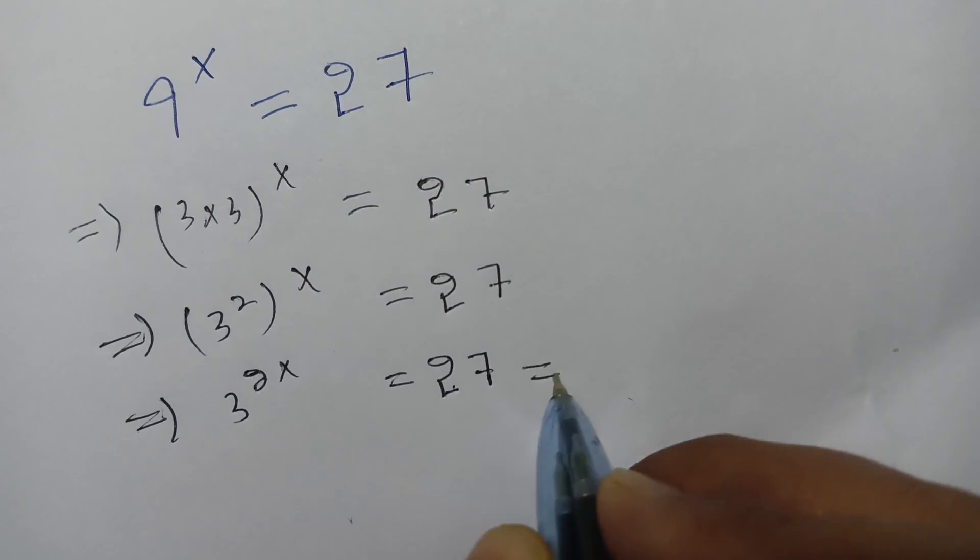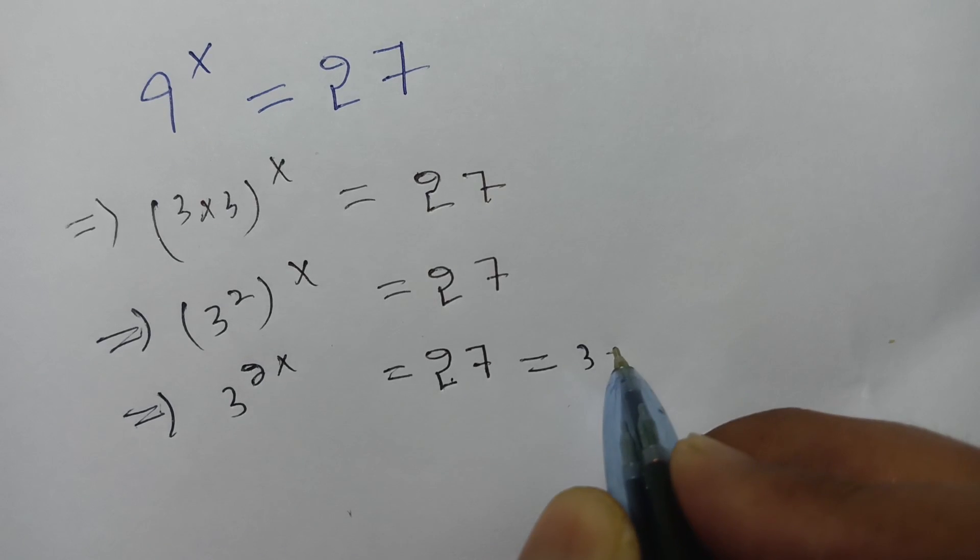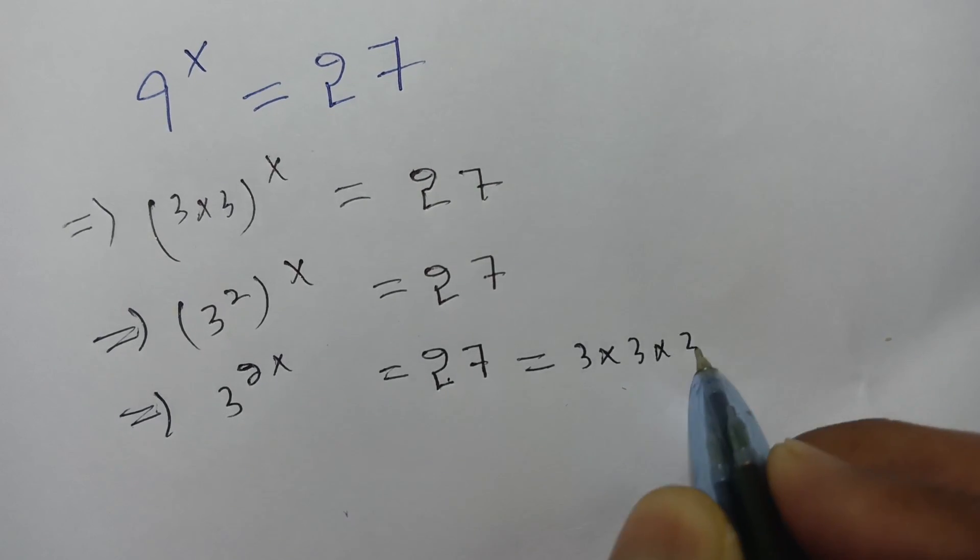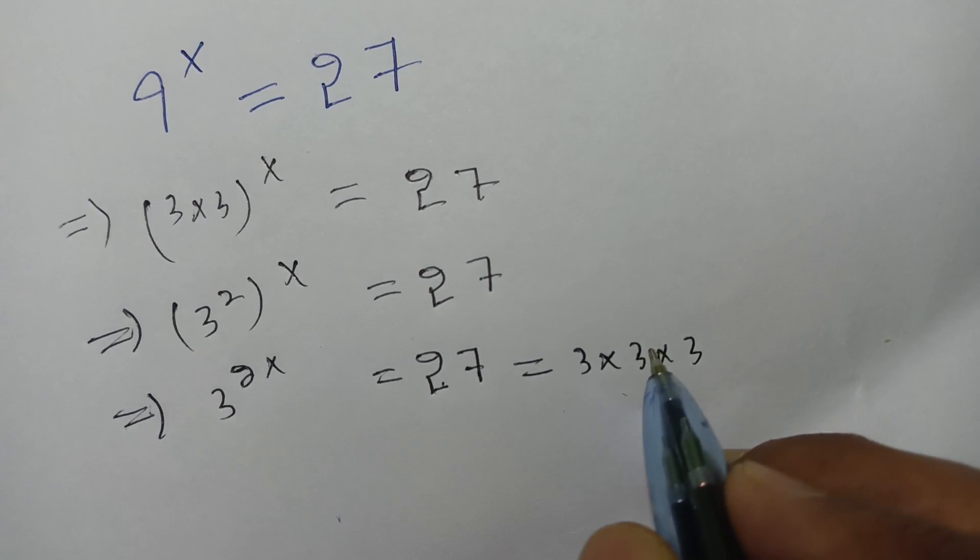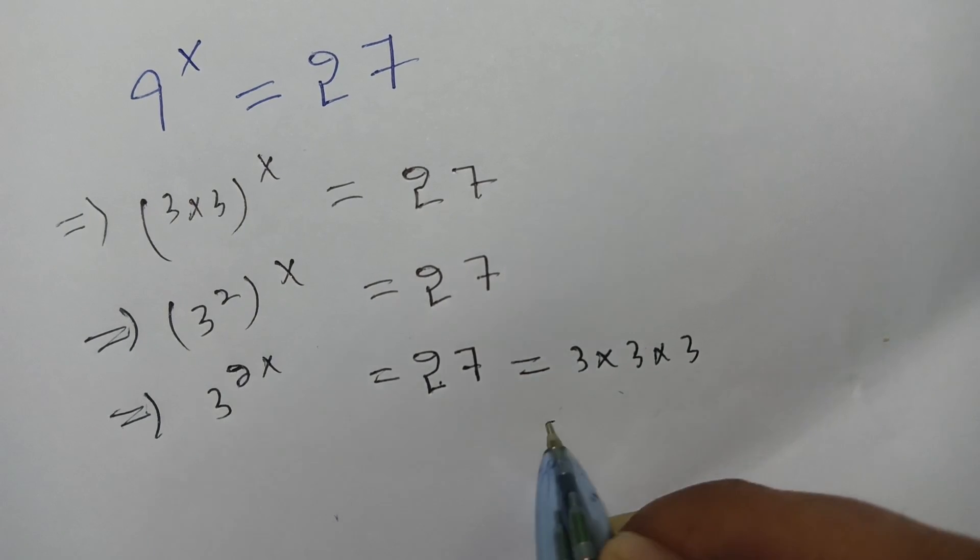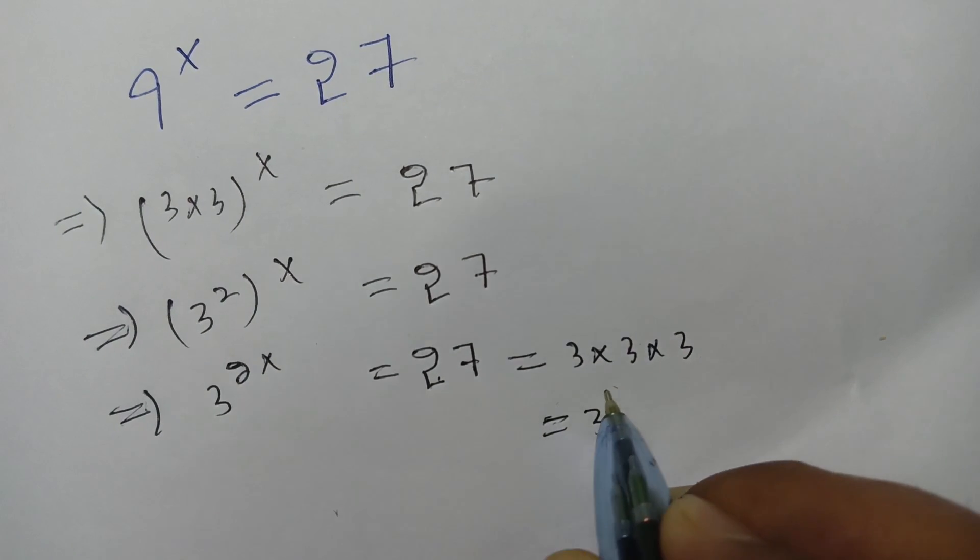And 27 can be written as 3 multiply 3. 3 times 3 is 9, 9 times 3 is 27. So it can be written as 3 to the power 3.